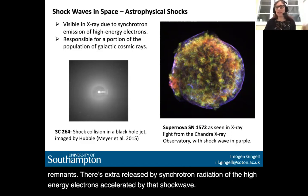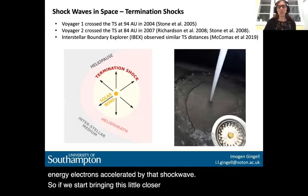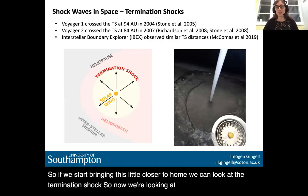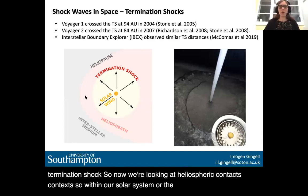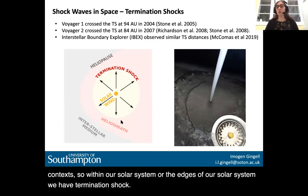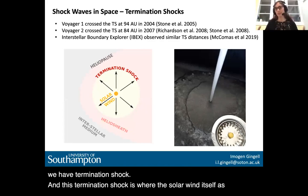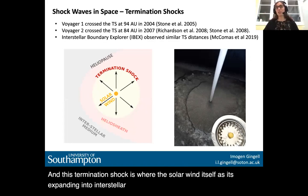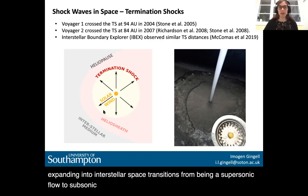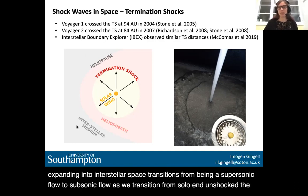Bringing this closer to home, we can look at the termination shock in a heliospheric context. Within or at the edges of our solar system, we have a termination shock where the solar wind itself, as it expands into interstellar space, transitions from being a supersonic flow to a subsonic flow as we transition from unshocked solar wind into the heliosheath, and then eventually into the interstellar medium.